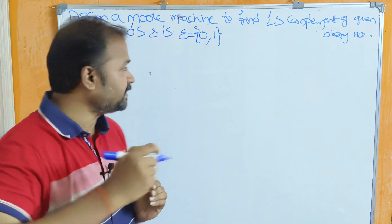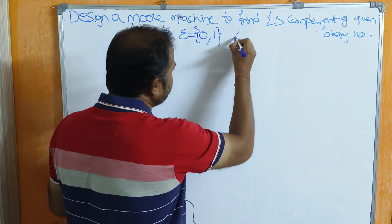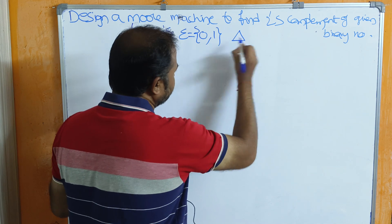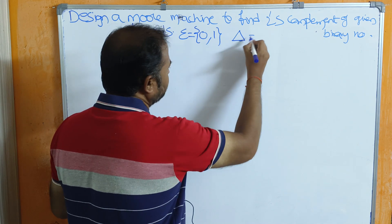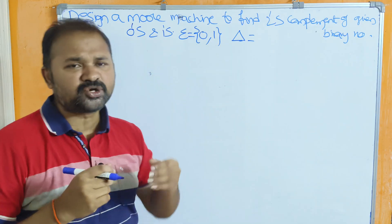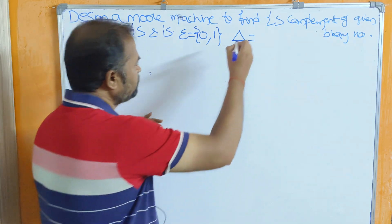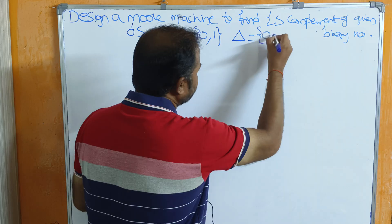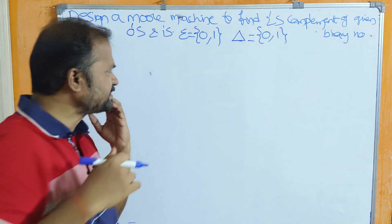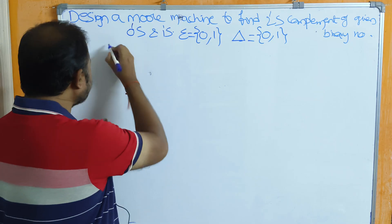The output alphabet is represented by delta. Since 2's complement also contains binary numbers — zeros and ones — the output alphabet also contains 0 and 1. So first let's see some examples.